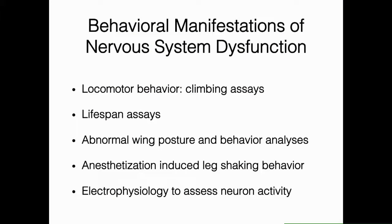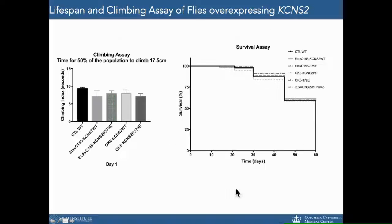To characterize these lines, we searched for behavioral manifestations of nervous system dysfunction using standard assays, including climbing assays to assess motor function, lifespan assays to assess aging, abnormal wing posture analysis — a phenotype described in many Drosophila neurodegenerative models — anesthetization-induced leg-shaking behavior, which has been described in the hyperexcitable mutants SHAB and Shaker, and electrophysiology to assess neuronal activity.